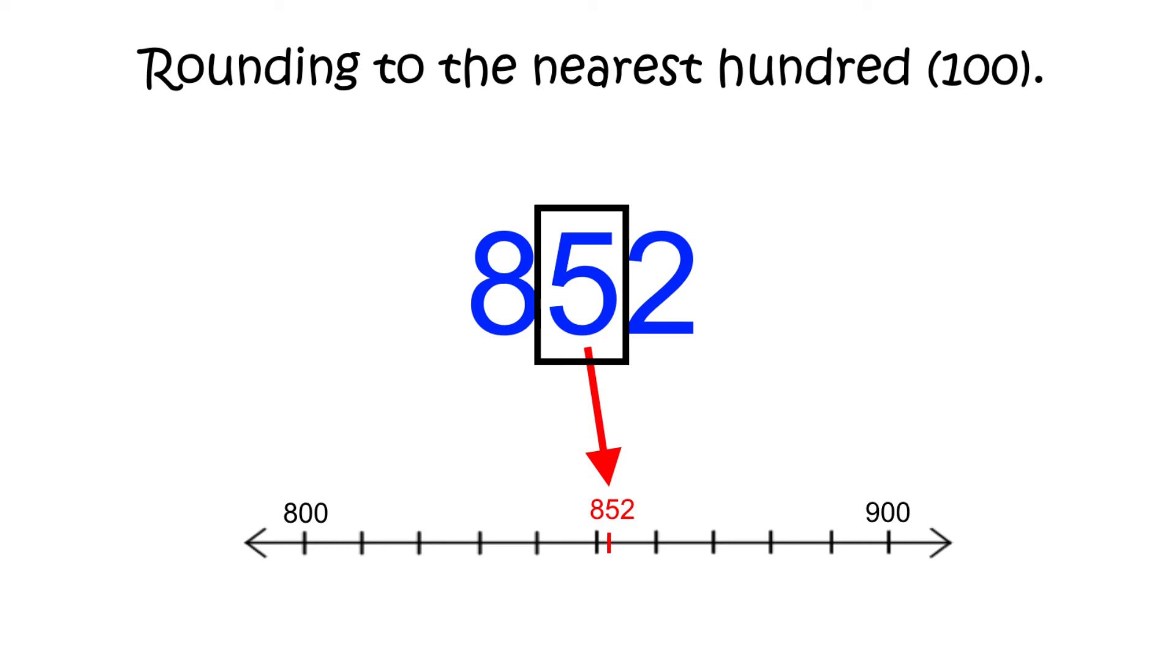Once again, if that digit is a 5 or greater, we would round up to 900. If the digit in the tens place is less than 5, we would round down to 800.